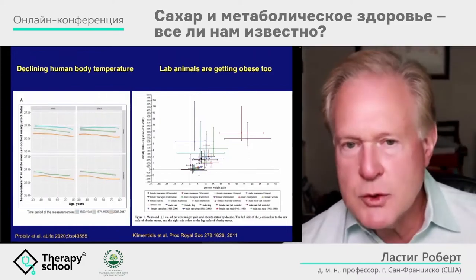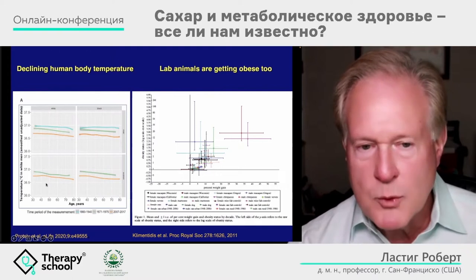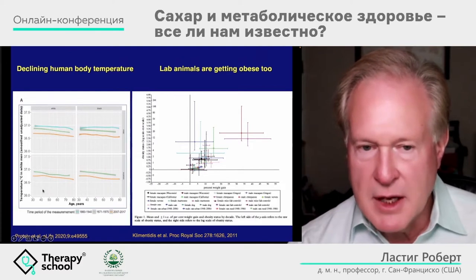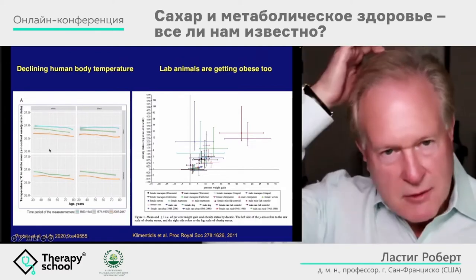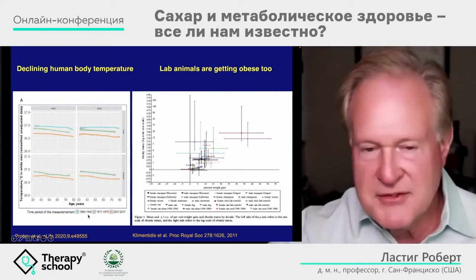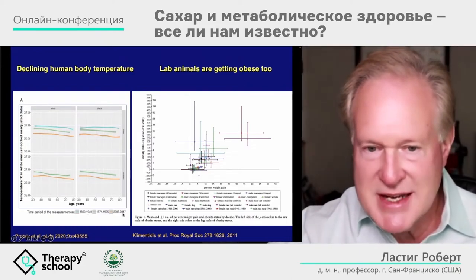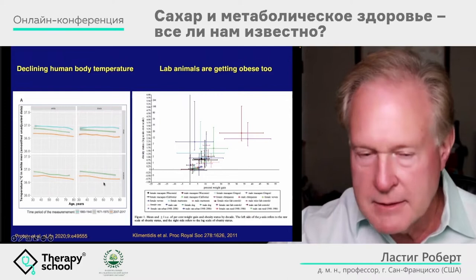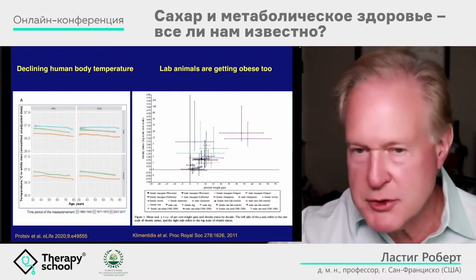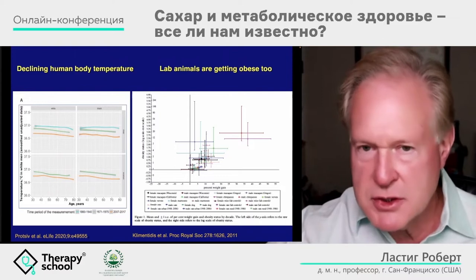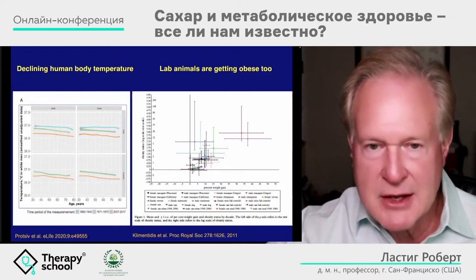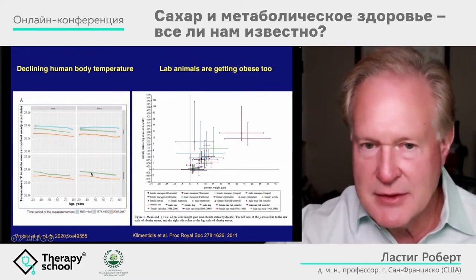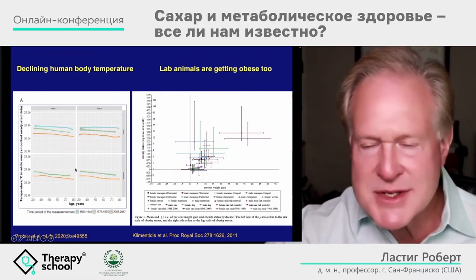But if that's the case, how do you explain these two phenomena? On the left, we're looking at body temperature across age groups from 1850 to the present. Body temperature has gone down over time. Body temperature is a function of heat generated by the mitochondria, and if the mitochondria are dysfunctional, they generate less heat — and that is exactly what we are seeing.